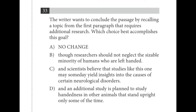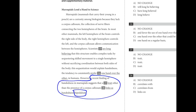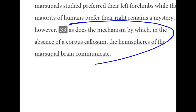Number thirty-three is about the conclusion of the passage, which should recall the topic from the first paragraph. Going back to that first paragraph, we keep talking about the corpus callosum and what it does — how it connects the two hemispheres of the brain and allows communication between them. Marsupials don't have this, but they still have handedness. So how do their brain hemispheres talk to each other? A, no change, is the right answer — referring back to the absence of a corpus callosum and how the hemispheres of the marsupial brain might communicate.